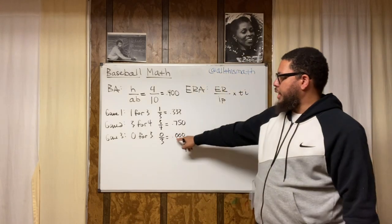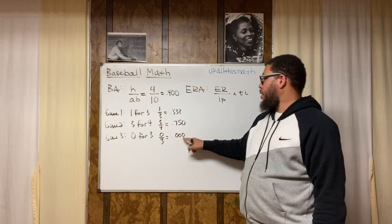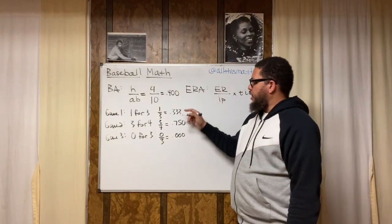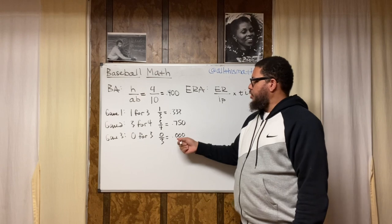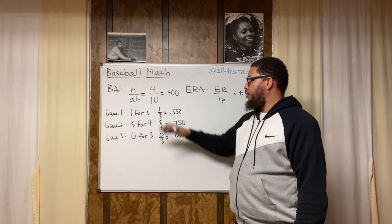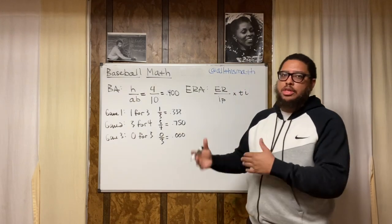And remember, we round it, we take it out to three decimal places. So understand how the combination of a 333, a 750, and a zero balances out to a 400. A 400 batting average overall for those three games. So it's just something for you to think about.